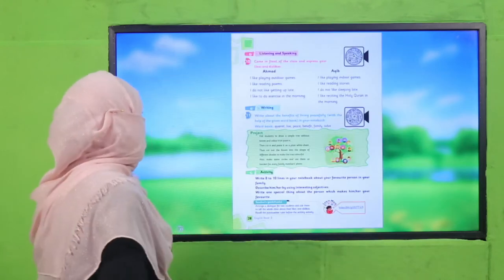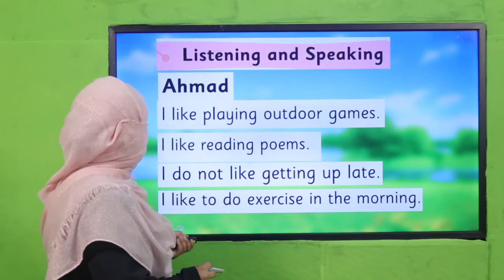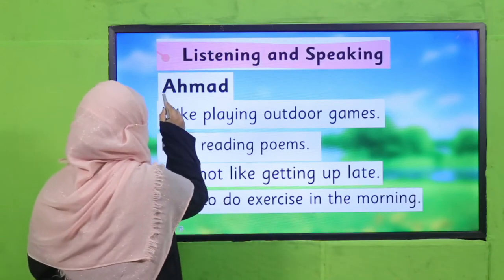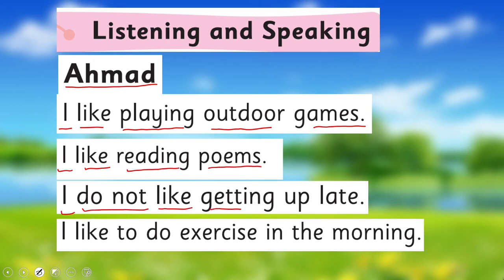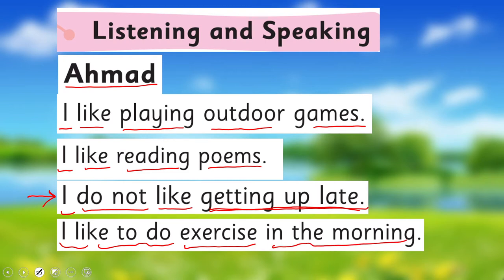Let's see from your book. Here is a boy named Ahmad. He is telling what he likes: 'I like playing outdoor games. I like reading poems. I do not like getting up late' — good, one should not get up late. 'I like to do exercise in the morning' — that's wonderful. You see how Ahmad is telling about his likings and dislikings.